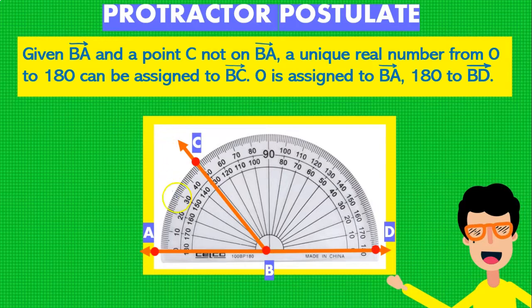Now guys it's pretty logical, but basically it says that when we have a ray in this case BA and we have a point C which is this one and it's not included in BA, what you can do is that you can assign real numbers to that ray.